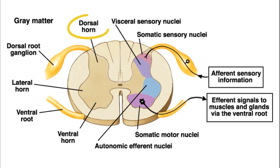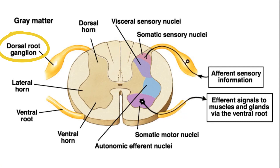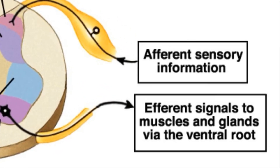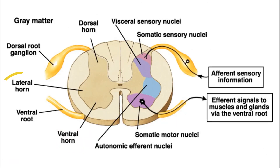The ventral horn is for motor activity and has a ventral root. The dorsal horn is for sensory activity and has a dorsal root and a dorsal root ganglion. Remember that the DRG — the dorsal root ganglion — is only present for the dorsal horn. Sensory is for afferent information and motor is for efferent information. There's also the lateral horn, which is for the autonomic nervous system.